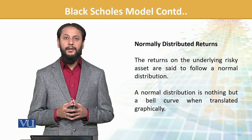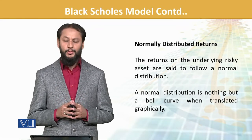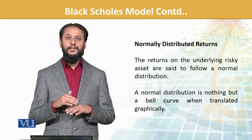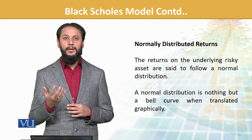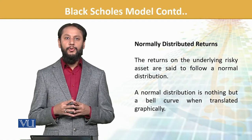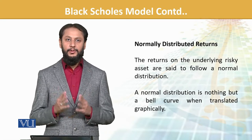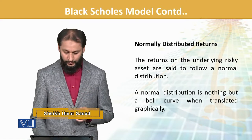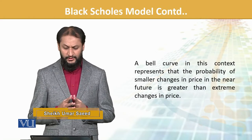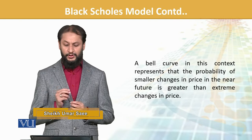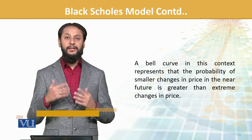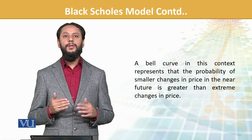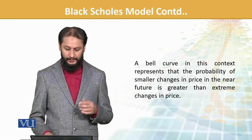It's assumed that returns are normally distributed. When we say normally distributed, it's like a bell curve. Major outcomes will stay close and extreme outcomes reduce. A bell curve in this context means the probability of smaller changes in price in near future is greater than extreme changes. Minor changes are more frequent, extreme options come less.